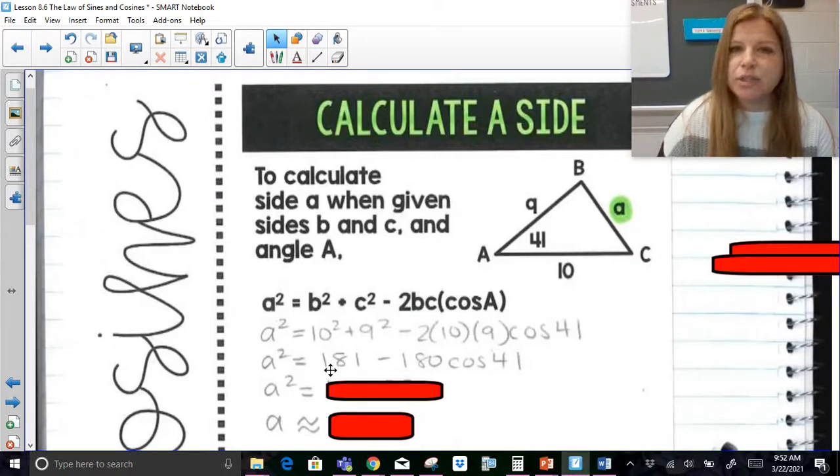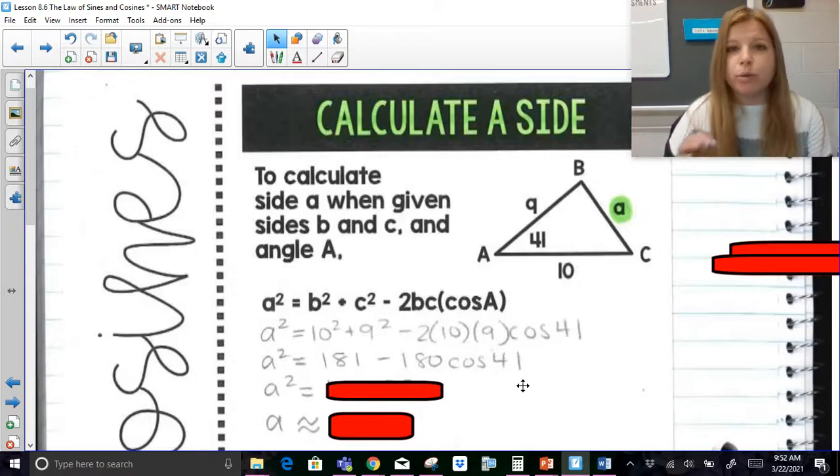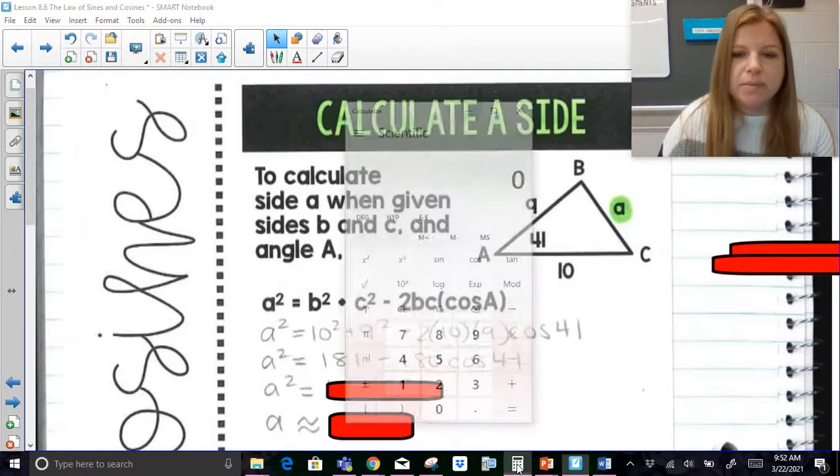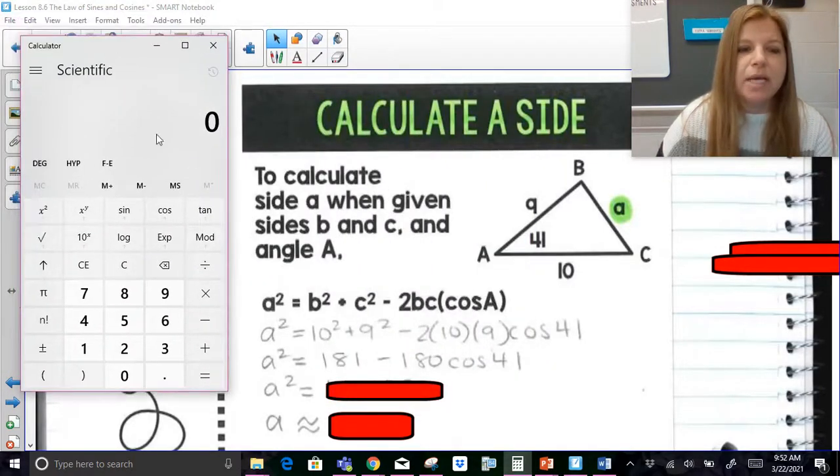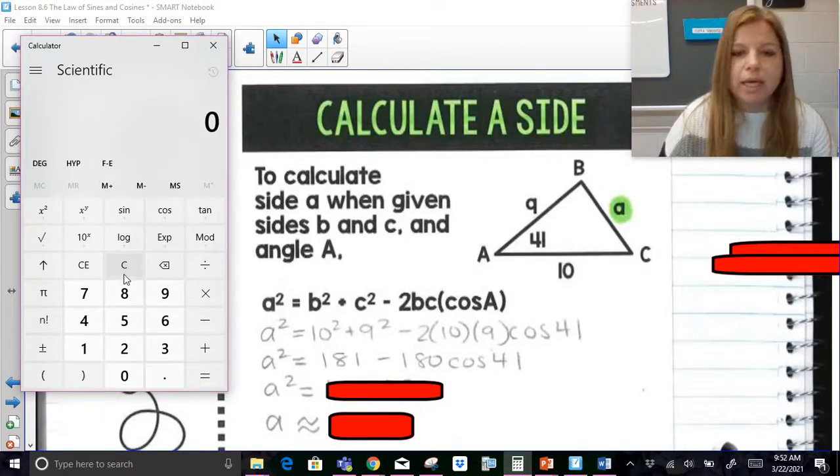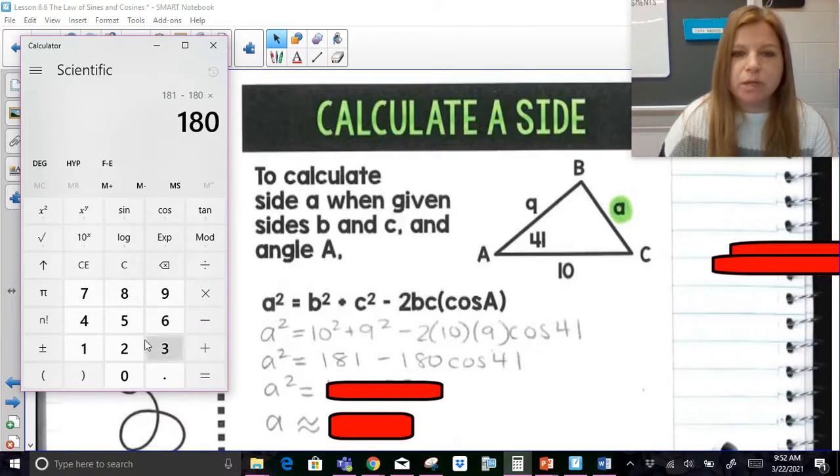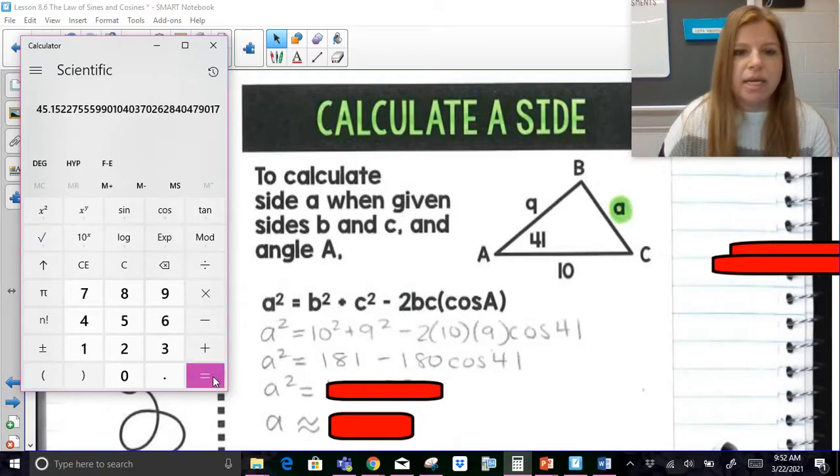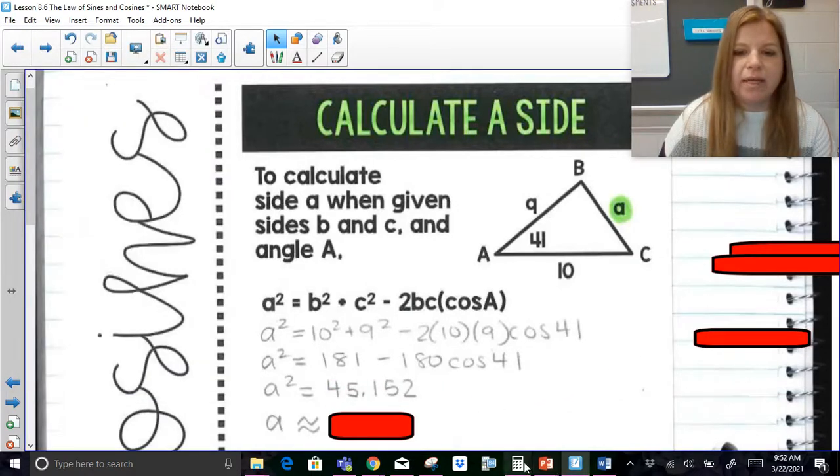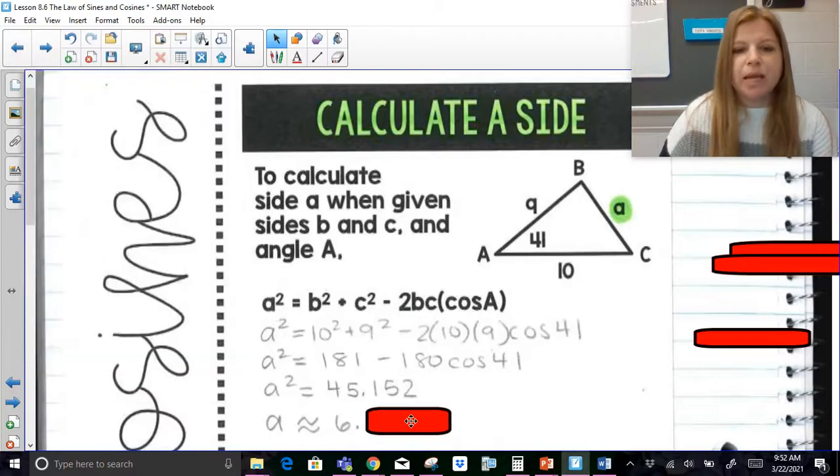Now, here at this point, you can type this in one swoop if you're working with a graphing calculator or a really good scientific, otherwise you may need to do it in two different steps. So I'm going to type this into, let's say, the calculator that's on your laptop. This would be the same calculator as your phone calculator. And so if I was typing this in, I'd have to do 181 minus 180 times, now remember when you type in cosine 41, on here you'd have to do 41 cosine, and then press enter. And so I end up getting that a squared is equal to 45.152. And then to find the square root of it, since that's a squared, I would need to take my square root, and I'm going to round to the nearest tenths, and I get 6.7.